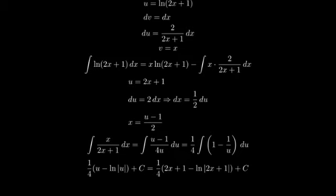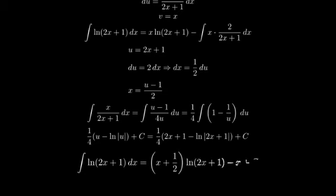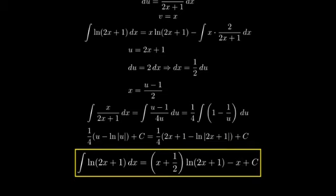Substituting back u equals 2x plus 1. Now, let's put everything together. After combining like terms and simplifying, our final answer is x plus 1 half times natural log of 2x plus 1 minus x plus c.